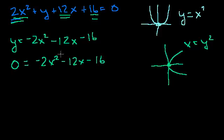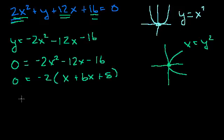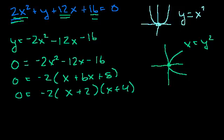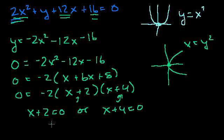So this is 0 is equal to minus 2 times, factoring out minus 2, you get x squared plus 6x plus 8. So 0 is equal to minus 2 times x plus 2 times x plus 4. Just factor that. And so for this whole thing to be 0, either this is 0 or that is 0. And so it's either x plus 2 is equal to 0 or x plus 4 is equal to 0. So x is equal to minus 2 and x is equal to minus 4.